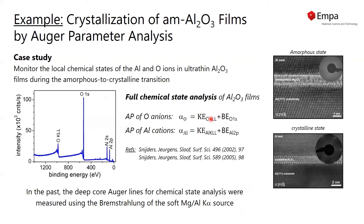which is the kinetic energy of the oxygen KLL plus the binding energy of the oxygen 1s, as well as the chemical state of the aluminum cations during the crystallization process, by measuring the aluminum KLL with help of the Bremsstrahlung and the Al 2p binding energy.